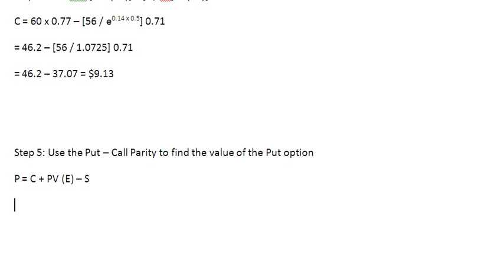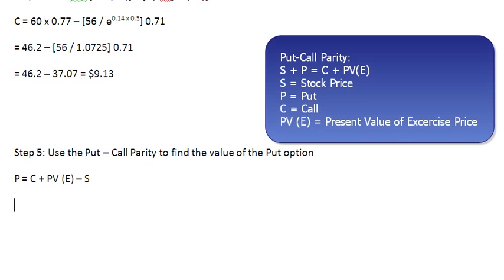So we have just manipulated the put call parity condition to find out the value of the put option now and now let us substitute our numbers into it. So the value of put option is equal to the value of the call which we have found out $9.13.